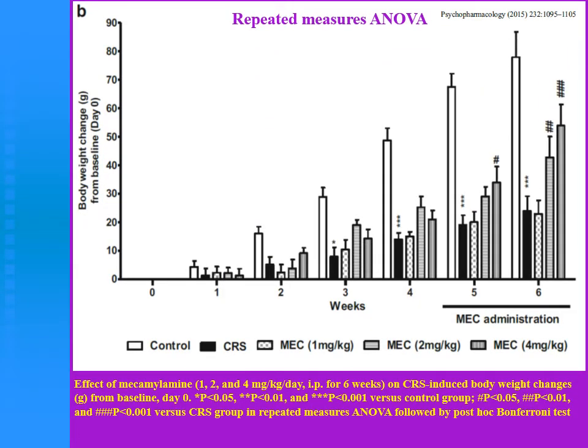For example, I have 5 groups of animals: a control group, a CRS group which is chronic restraint stress, and my mecamylamine which is MEC in 3 doses. I have to watch them from week 1 to week 6 and monitor body weight changes. I do analysis with repeated measures, and in post hoc — like Bonferroni for example — you can find analysis for every animal over 6 weeks.